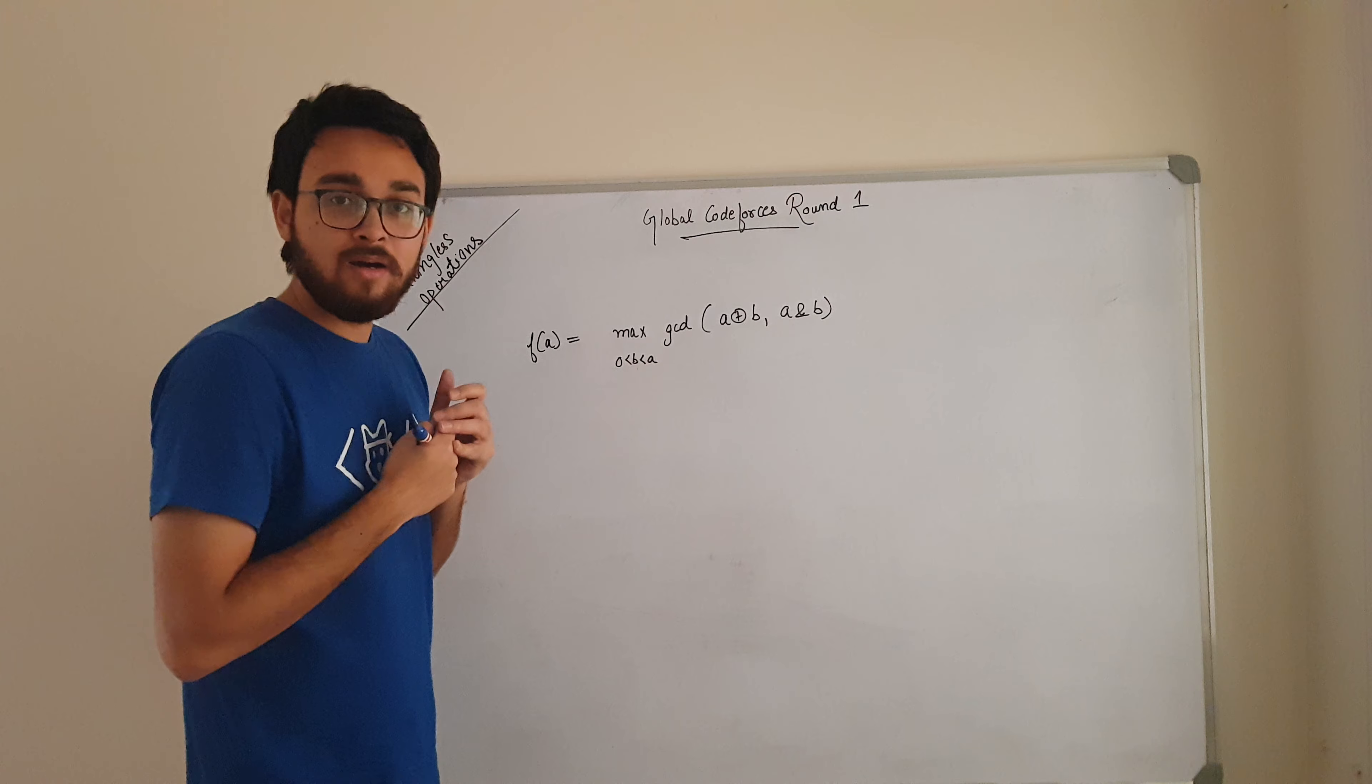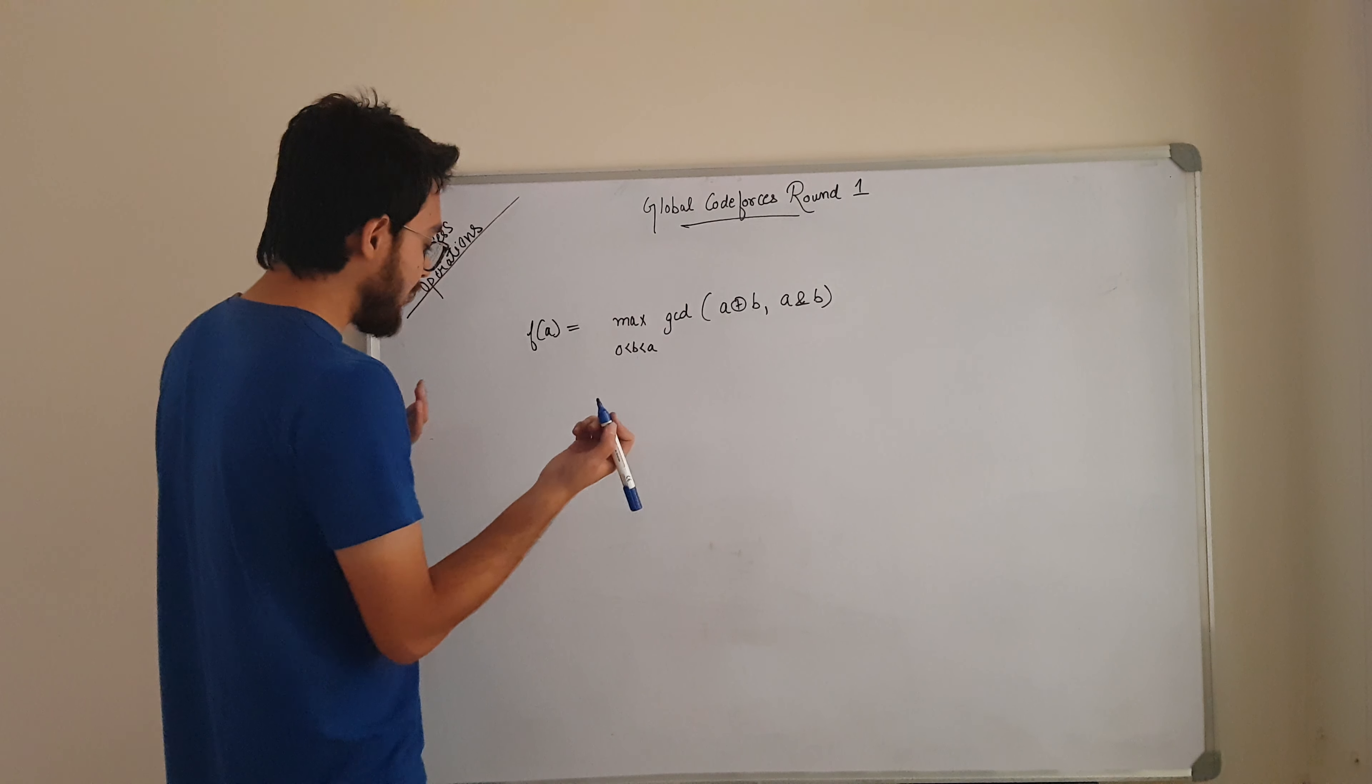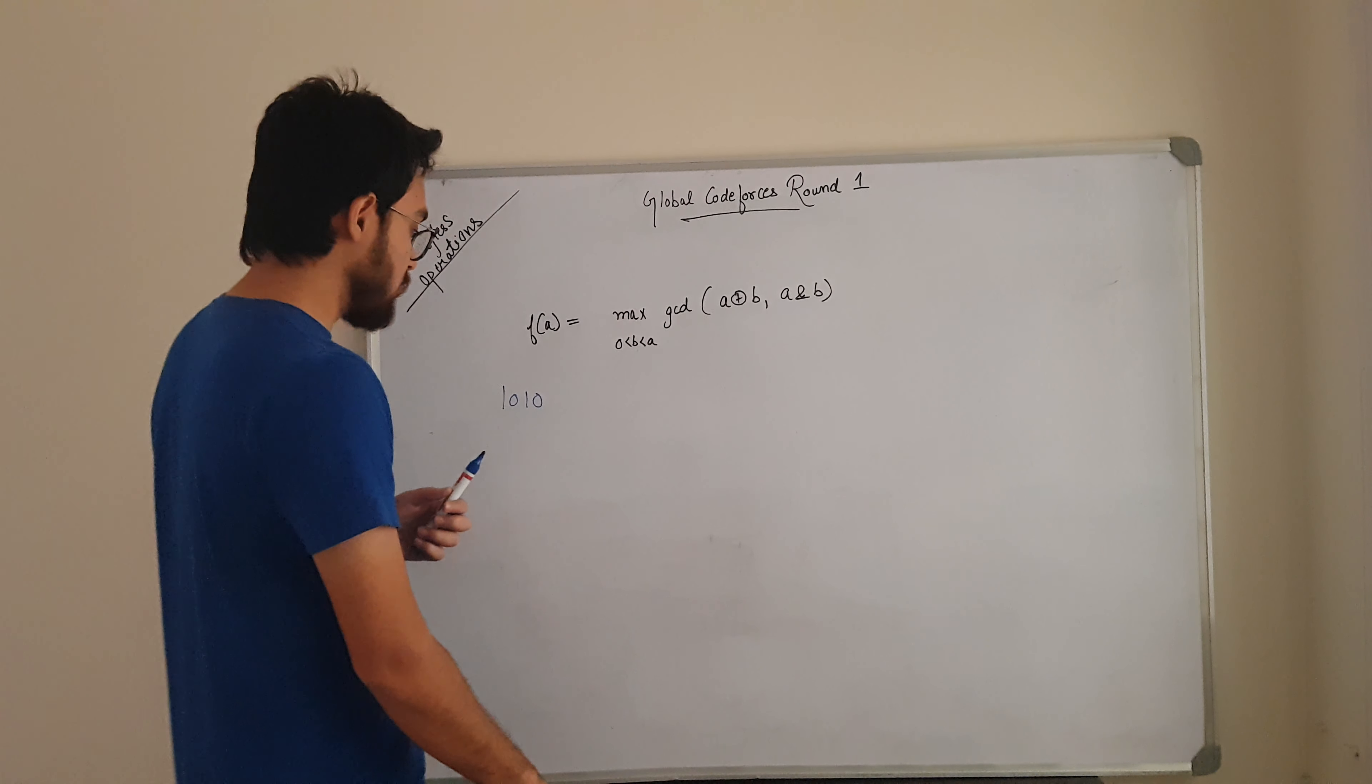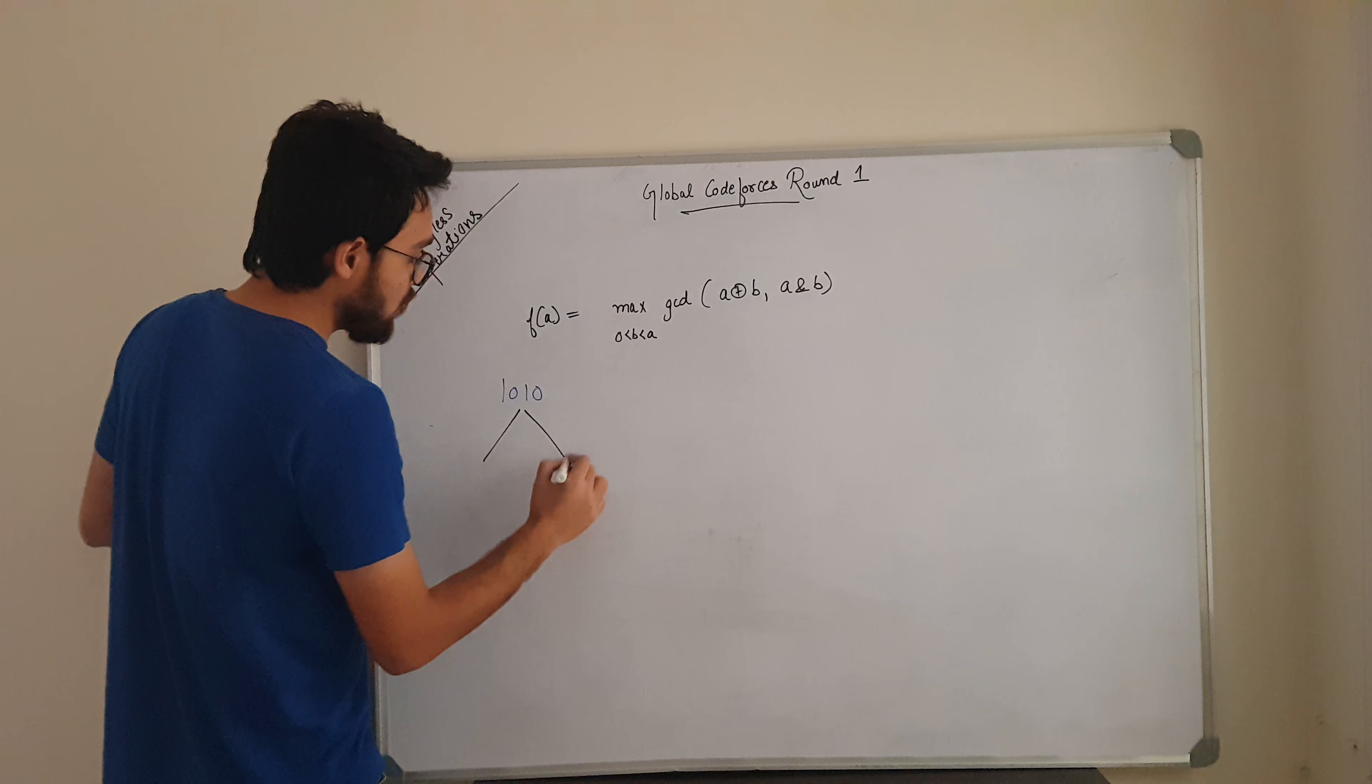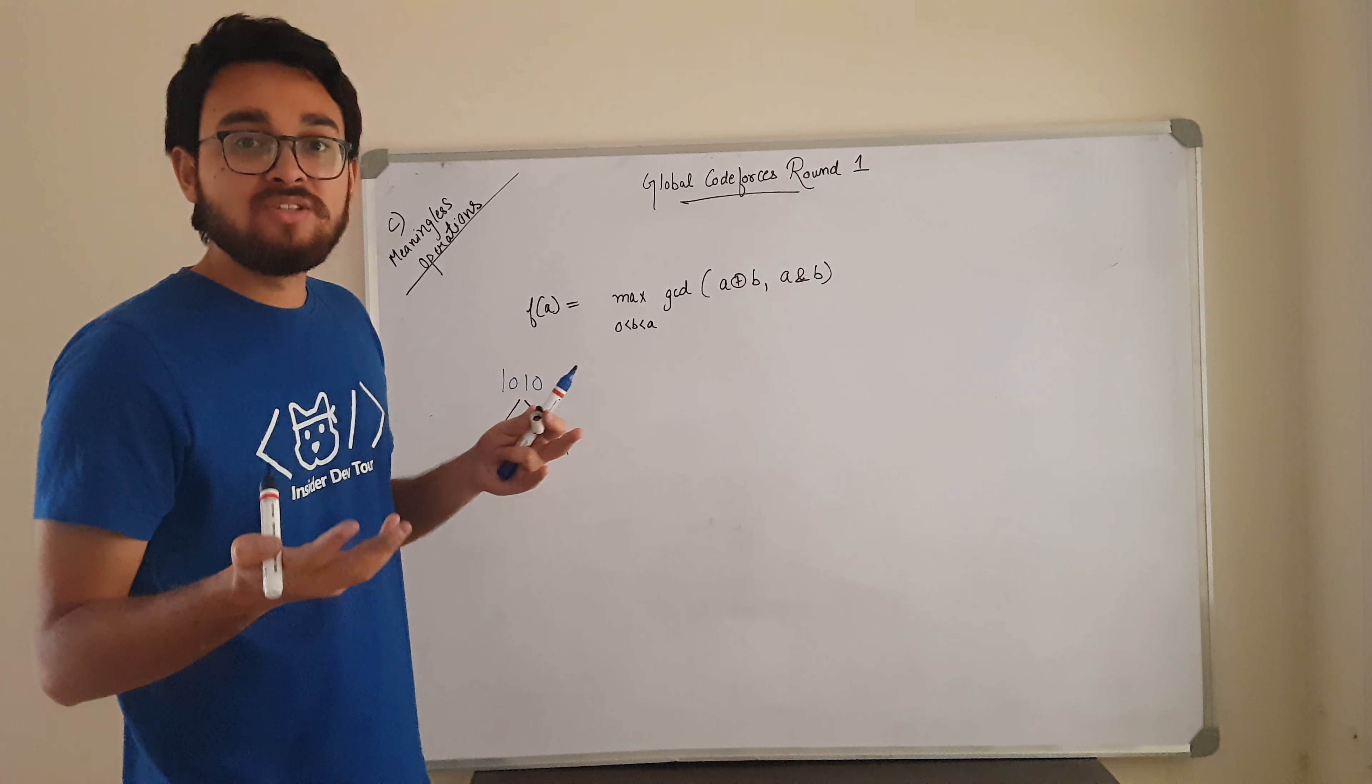Let's take any random number in its binary representation and let's see what we can do with it. So let me take a number like 1010. So we have taken this number 1010. So now what we want to do is, we want to take a number B for which this GCD will be maximum.